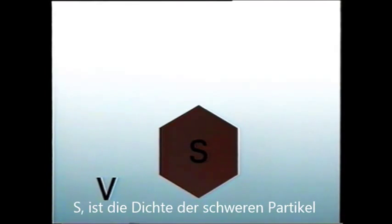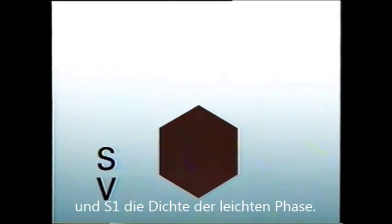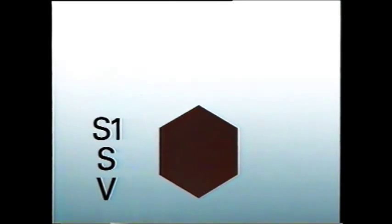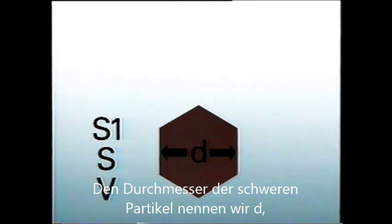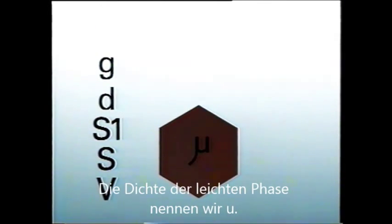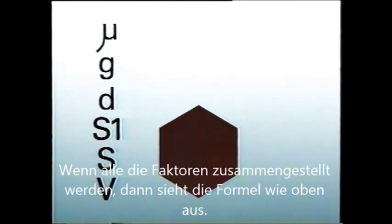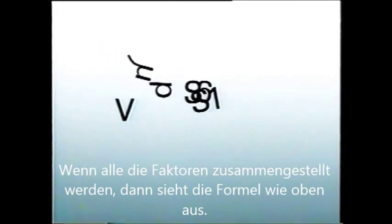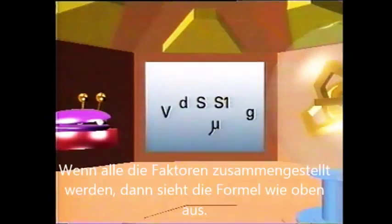S is the density of the heavy phase particles or globules, and the density of the light phase globules is S1. We call the diameter of the heavy phase particles D, and the gravitational acceleration is called G. The viscosity of the lighter phase liquid we call Mu. When all of these factors are combined, this is what the formula looks like.